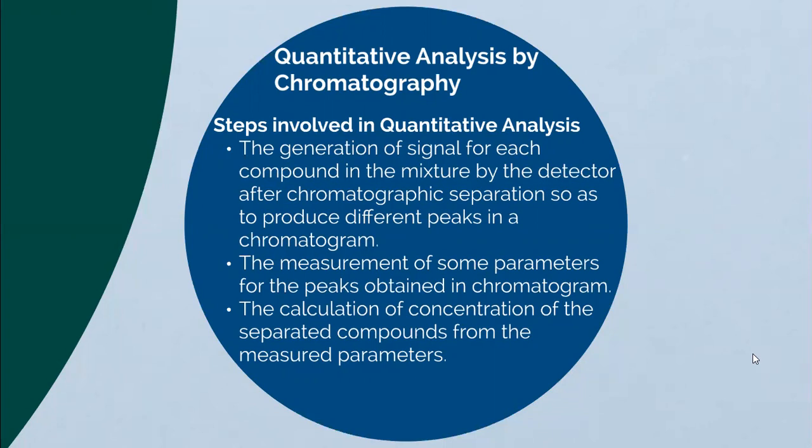The specificity of the detector may cause certain peaks to be missed in the quantification process. Similarly, the flow rate of the mobile phase and the temperature of the column and detector determine the accuracy of quantification. For example, a differential refractive index detector requires good control on temperature, while an ultraviolet detector is less critical in this respect.